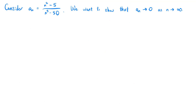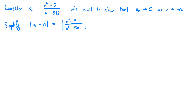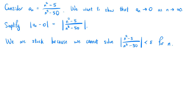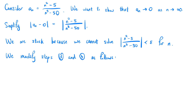We consider one more example, which is the sequence (n squared minus 5) over (n cubed minus 50). We want to show that an converges to 0 as n tends to infinity. We simplify the absolute value of an minus 0, which equals the absolute value of (n squared minus 5) over (n cubed minus 50). Now we are stuck, because we cannot directly solve the inequality for n. In this case, we can modify steps 3 and 4.